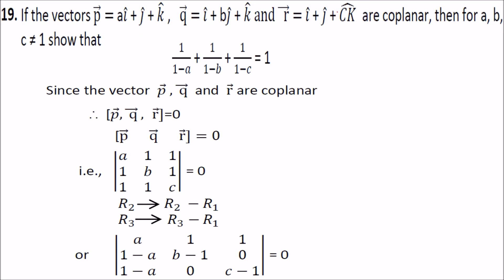If the vectors p, q and r are coplanar, then for a, b, c not equal to 1, you have to prove a certain identity. Since p, q, r are coplanar, [p q r] equals 0. Writing p as (a,1,1), q as (1,b,1) and r as (1,1,c), we form the determinant equal to zero. Apply R2 minus R1 and R3 minus R1 to get zeros.